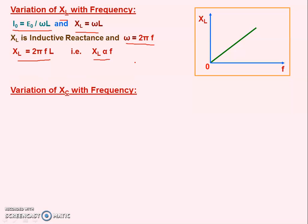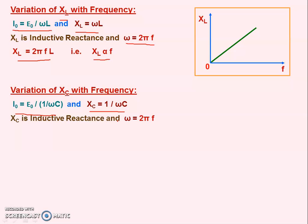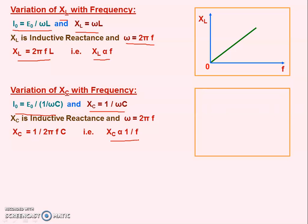Now for capacitive reactance XC: in the capacitor circuit, I₀ = E₀ divided by (1/ωC), so this 1/ωC having the unit ohm is the capacitive reactance. XC = 1/ωC = 1/(2πfC). This means XC is inversely proportional to f. The graph of XC vs f is like Boyle's law graph - similar to the P vs V diagram - a hyperbolic curve. This is the variation of XL and XC with frequency.